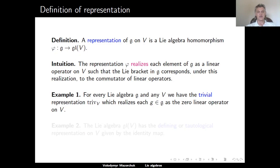Let's consider a couple of examples. The first example is the trivial one: if we have any Lie algebra g and any vector space v, we can define the trivial representation of g on v by realizing each element in g as the zero linear operator on v. This is a homomorphism of Lie algebras from g to gl(v), so the whole of g is mapped to the zero vector, and the Lie bracket is obviously preserved.